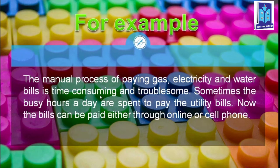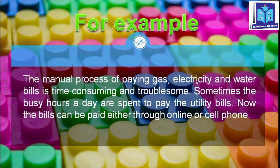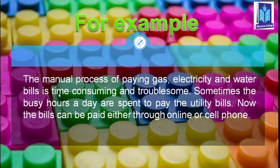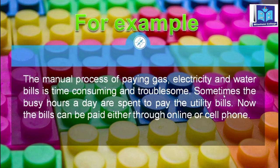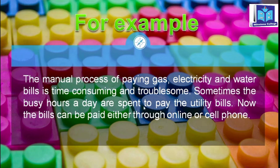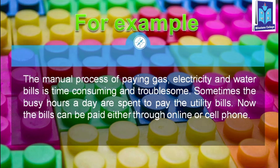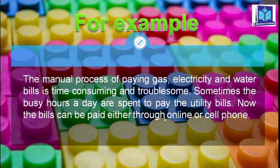For example, the manual process of paying gas, electricity, and water bills is time consuming and troublesome. Sometimes busy hours of a day are spent just to pay utility bills. Now these bills can be paid either through online banking or cell phone.